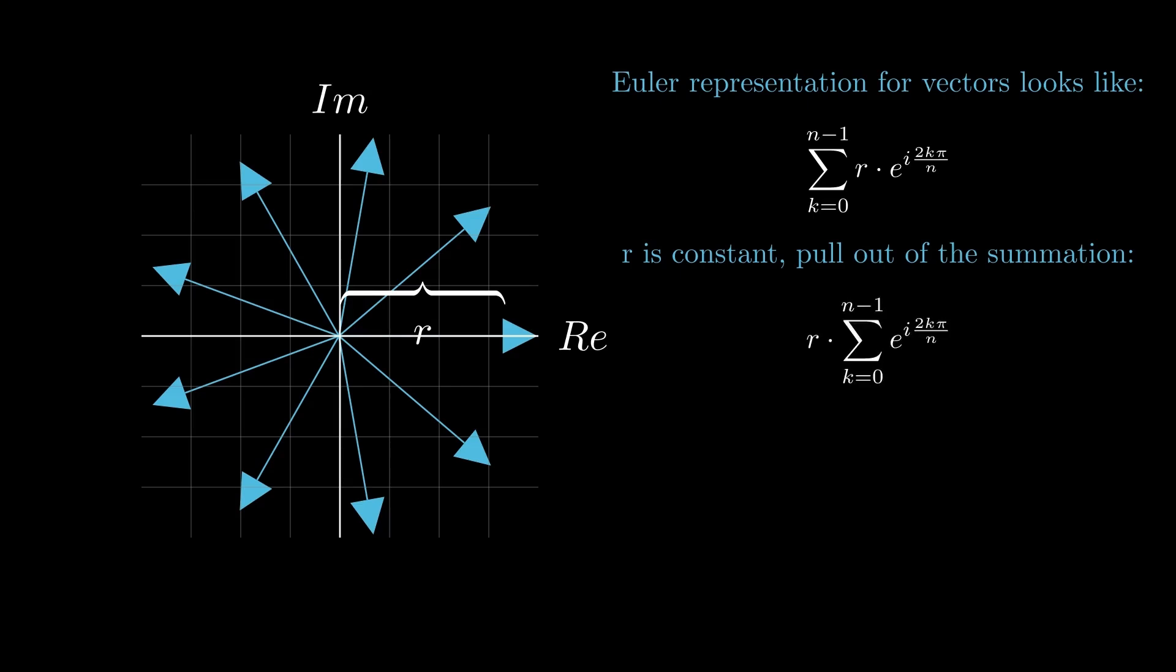We already proved that what this summation is: 0, right? So, r times 0 is 0. And that wraps up our proof that the sum of vectors is 0 using Euler's formula and the properties of geometric series.